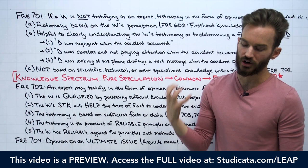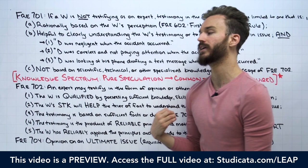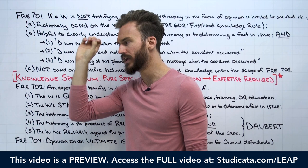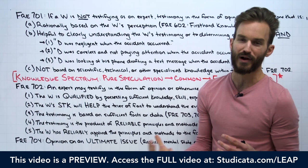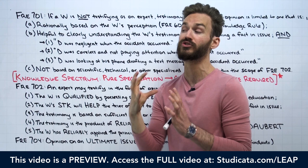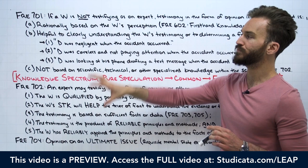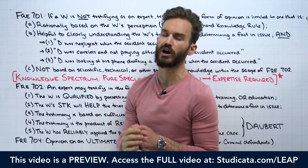Our general rule is that we don't love lay witnesses giving opinions. We really want a lay witness giving non-expert testimony to stick to the facts — what did you see, what did you hear. Because the whole purpose of the trial is presenting evidence to the jury so they can determine the facts. We call the jury the fact-finder because it's their job to analyze the evidence and determine what actually happened.